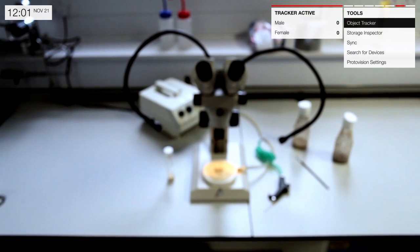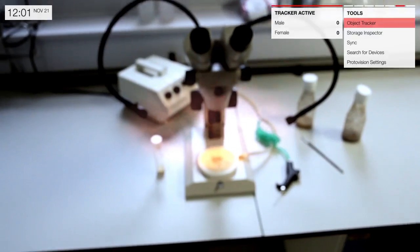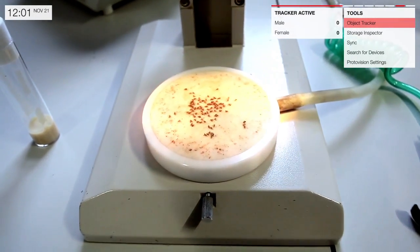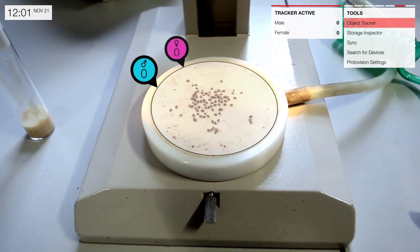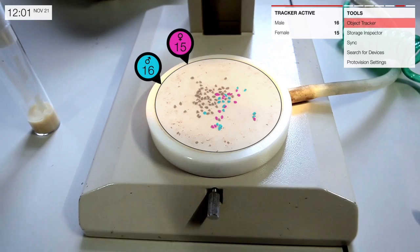With the use of custom tools, the system can help make experiments easier to manage. Using inbuilt image tracking, the system can help in tasks such as counting fruit flies, saving time and avoiding miscounts.